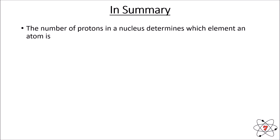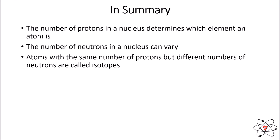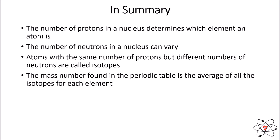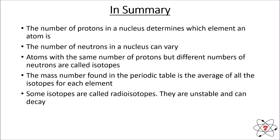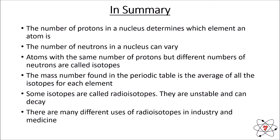In summary: the number of protons in the nucleus determines which element an atom is. The number of neutrons in the nucleus can vary. Atoms with the same number of protons but a different number of neutrons are called isotopes. The mass number found in the periodic table is an average of all isotopes for each element. Some isotopes called radioisotopes are unstable and can decay, and there are many different uses of radioisotopes in industry and medicine.